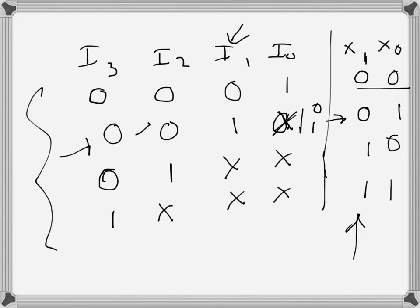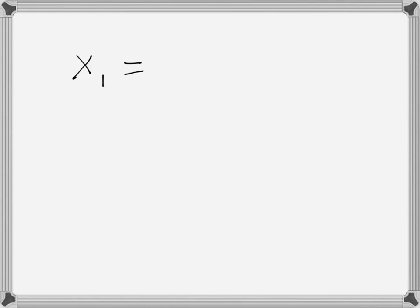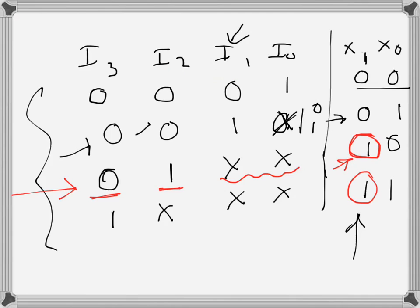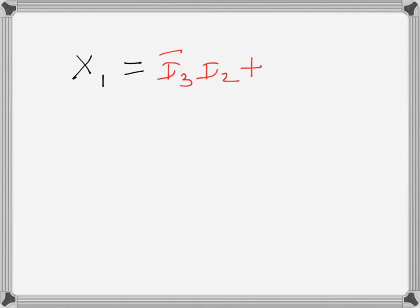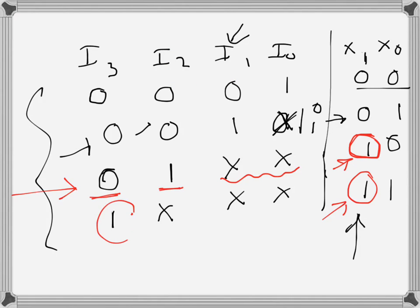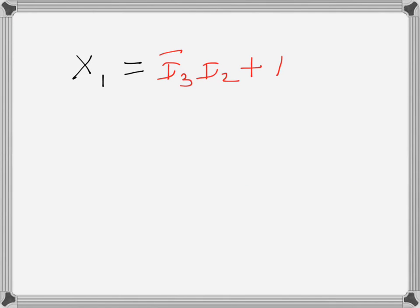For output x1, we look at the rows where x1 is 1. There are two such rows. In the first, i3 must be 0 and i2 must be 1 (i1 and i0 don't matter), giving the term i3̄·i2. In the second, i3 is 1 and everything else is don't-care, giving just i3. So the sum-of-products expression for x1 is: x1 = i3̄·i2 + i3.